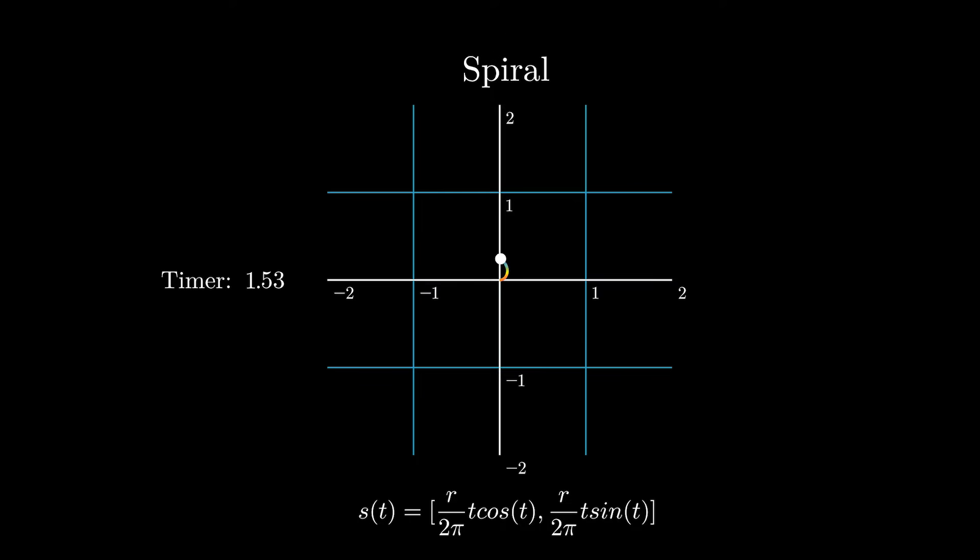In our spiral, the x and y coordinates are just given by those two functions separated by a comma underneath the graph.